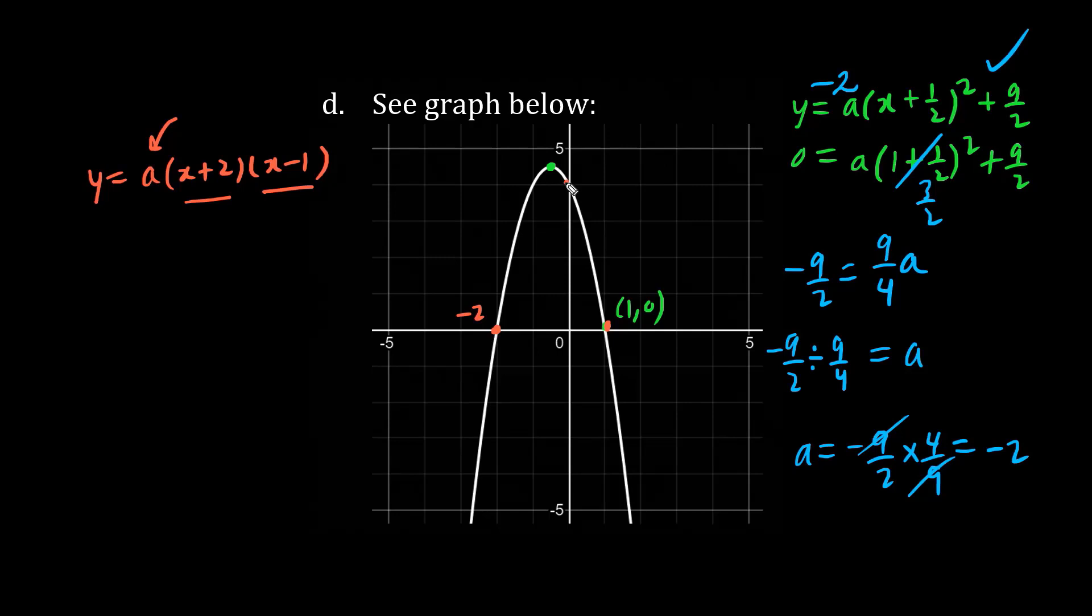So we'll substitute one other point that's not on the x-axis. Let's plug in the y-intercept, which appears to be 0 comma 4. So the y value is 4 and the x value is 0. So we have 0 plus 2, 0 minus 1. We have 2 times negative 1 is negative 2. So we have negative 2A equals 4. Dividing both sides by negative 2, we have A equals 4 divided by negative 2 is negative 2.